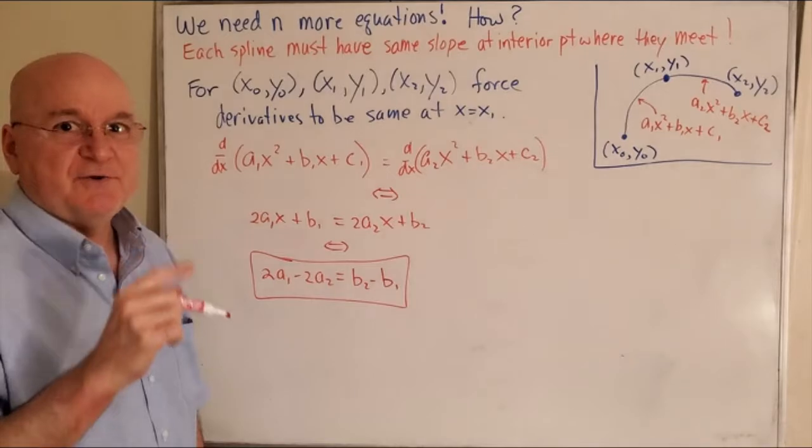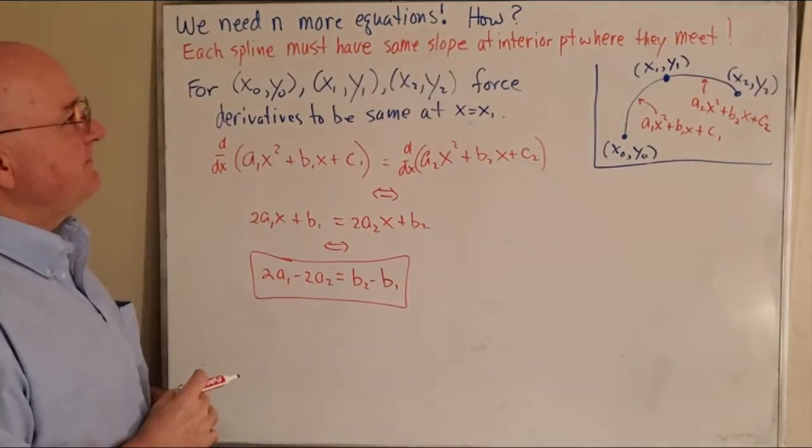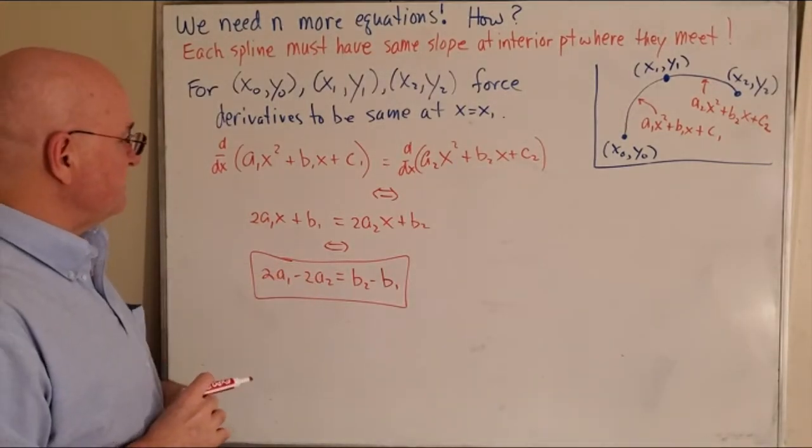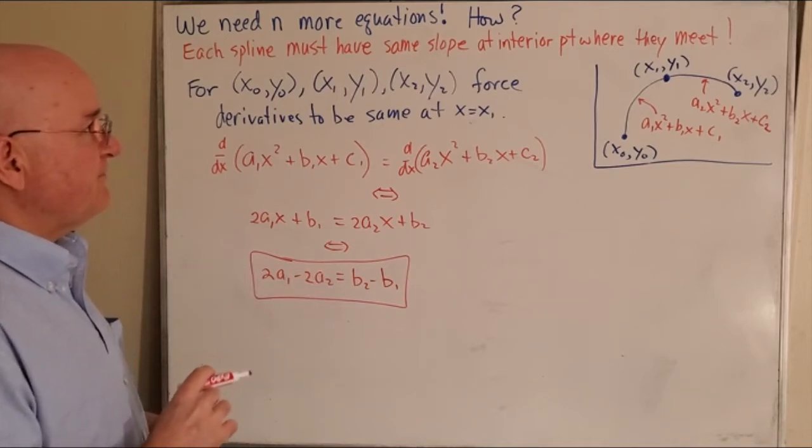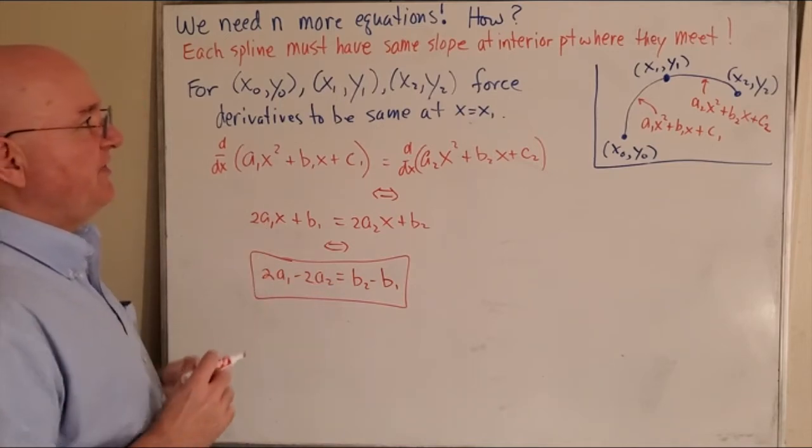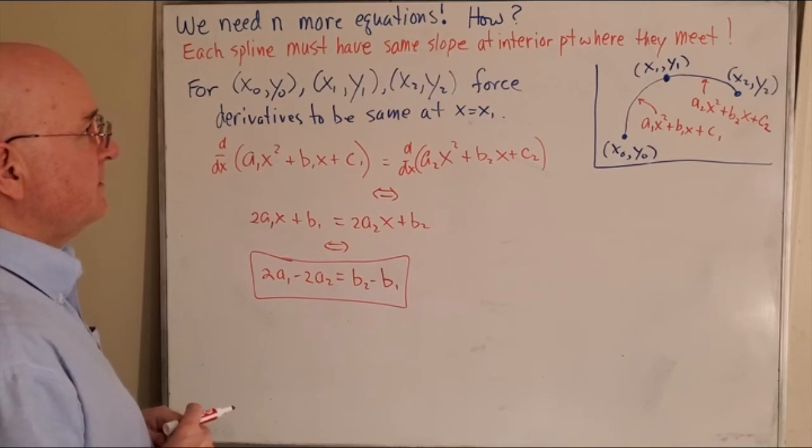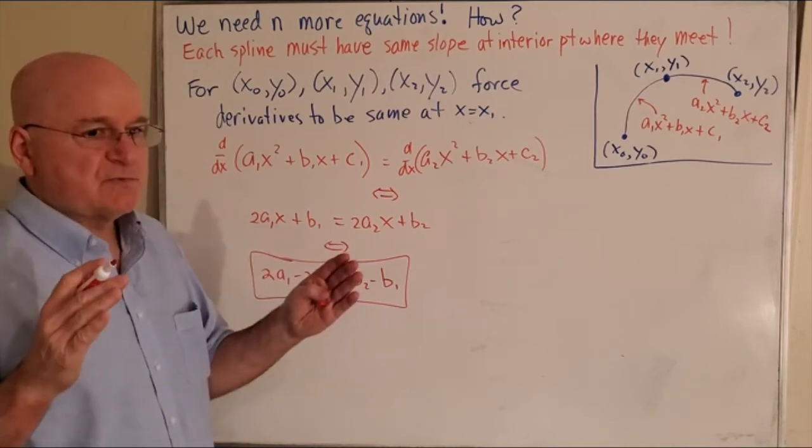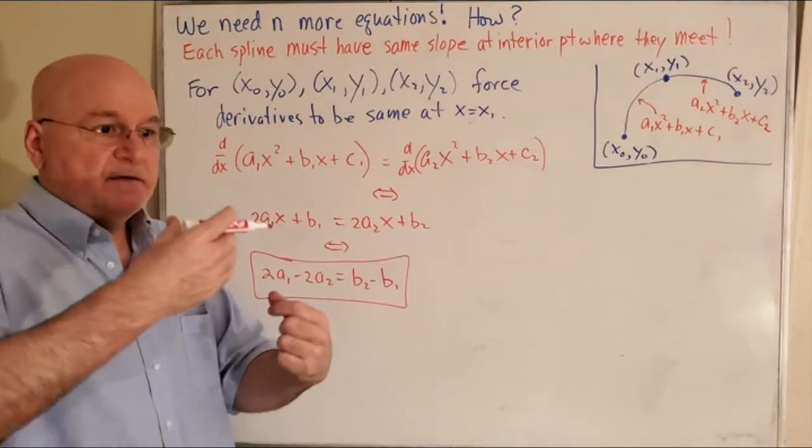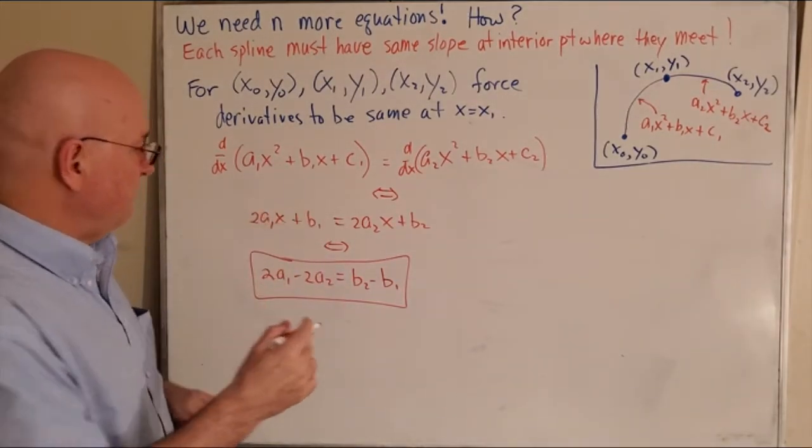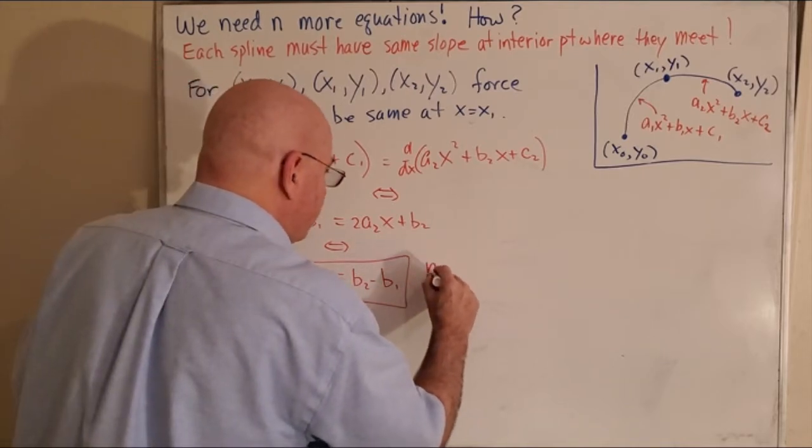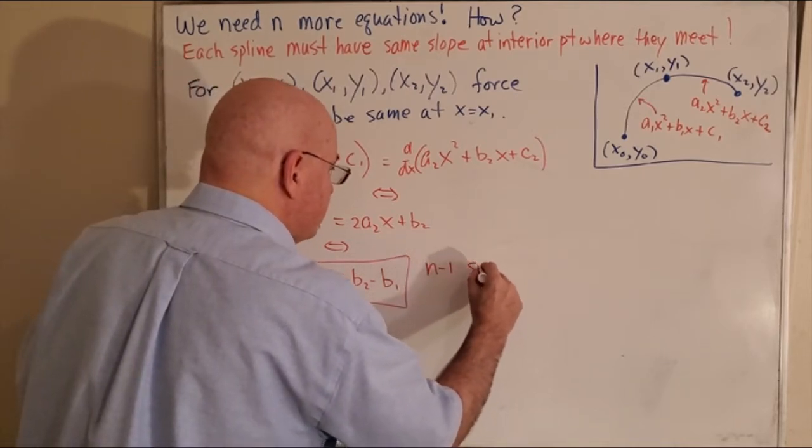We found one more equation, but then again, how many equations are there like this? There's one for each internal knot. So that would be, we have n+1 data points because we have n segments or n quadratics, so the internal points we have n-1 such equations.